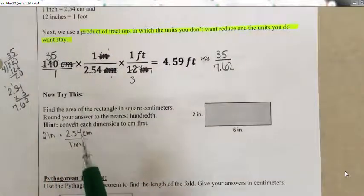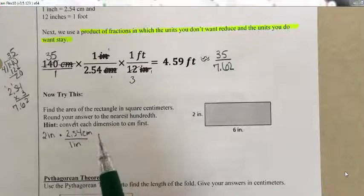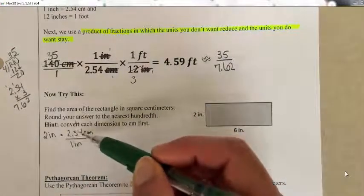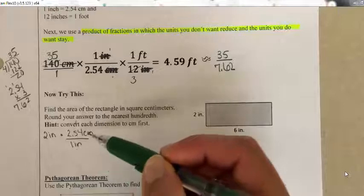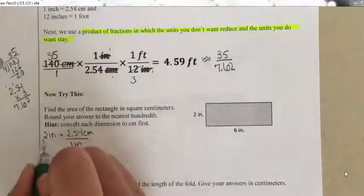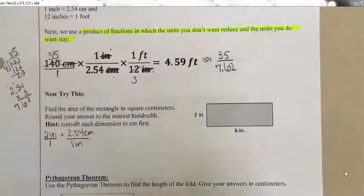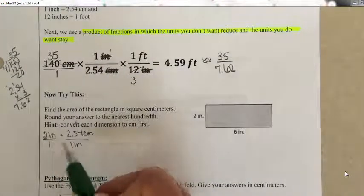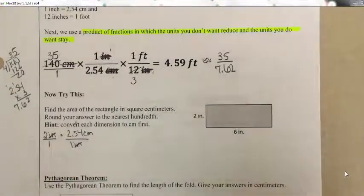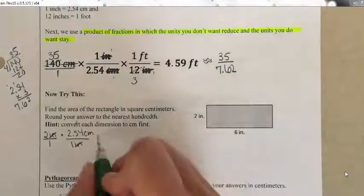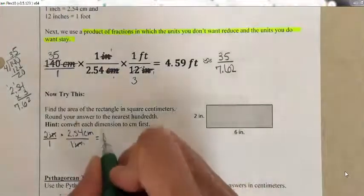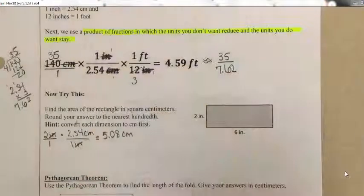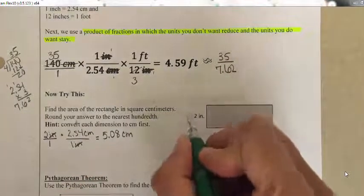I write the unit conversion as a fraction — 2.54 centimeters over 1 inch — and write 2 inches over 1. The inches in the numerator and denominator reduce, meaning we divided top and bottom by inches, so those cancel. This gives us 5.08 centimeters.